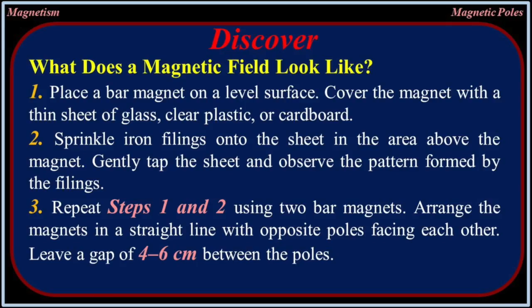What does a magnetic field look like? Place a bar magnet on a level surface. Cover the magnet with a thin sheet of glass, clear plastic, or cardboard. Sprinkle iron filings onto the sheet in the area above the magnet. Gently tap the sheet and observe the pattern formed by the filings.